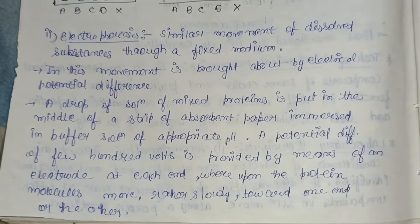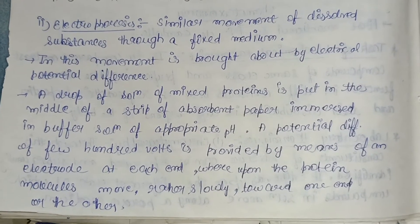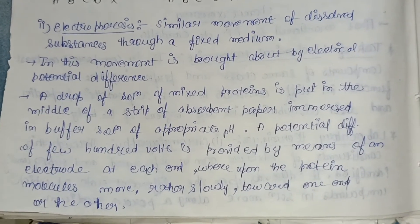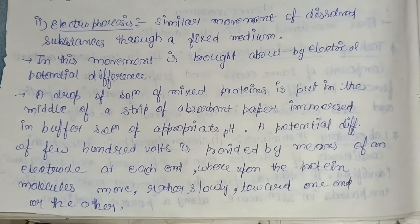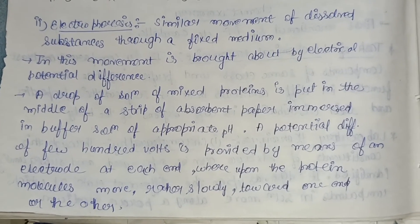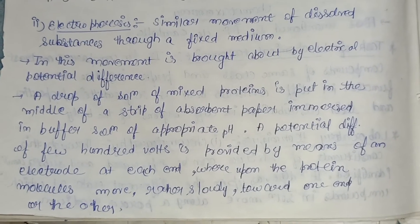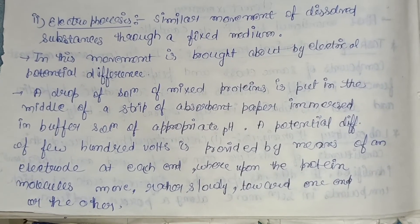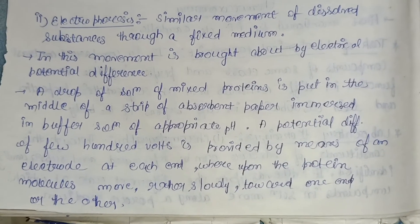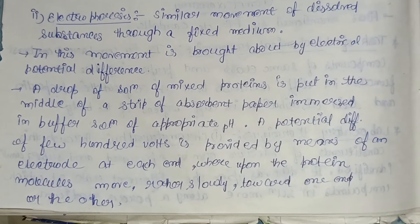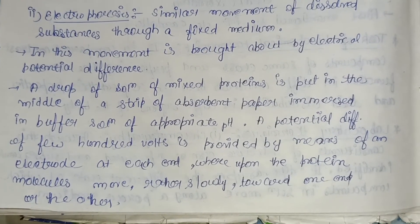Another technique is electrophoresis — the movement of dissolved substances through a fixed medium brought about by electrical potential difference. A drop of a solution of mixed proteins is put in the middle of a strip of absorbent paper immersed in a buffer solution of appropriate pH. A potential difference of a few hundred volts is applied via electrodes at each end, causing the protein molecules to move slowly toward one end or another.